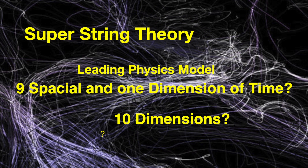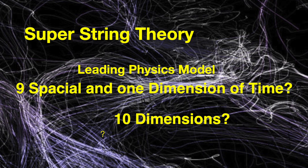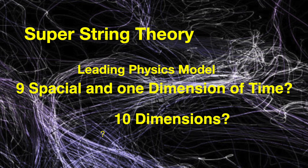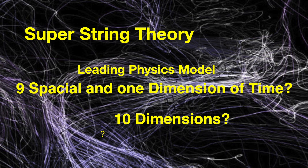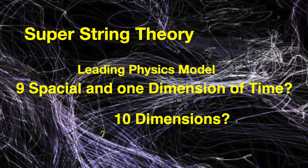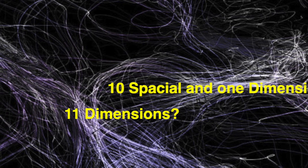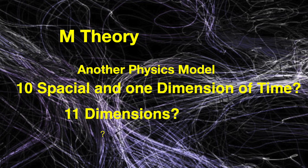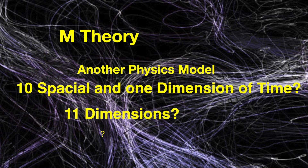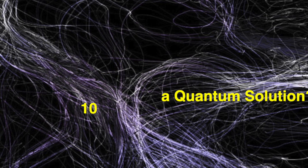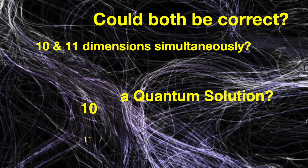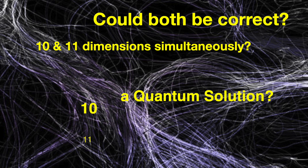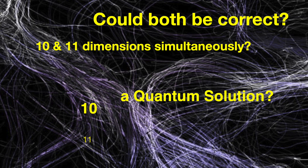SuperString Theory, with its ten dimensions — nine spatial and one of time — is in essence a scientific attempt to explain the reality all around us. It's one of the leading physics models and it attempts to explain the inner workings of the universe. M Theory is a little bit different and states that there are 11 dimensions, made up of 10 spatial and one temporal. So which is correct — SuperString with its 10 dimensions, or M Theory with its 11? Consider for a moment that both are indeed correct and there are 10 and 11 dimensions simultaneously.